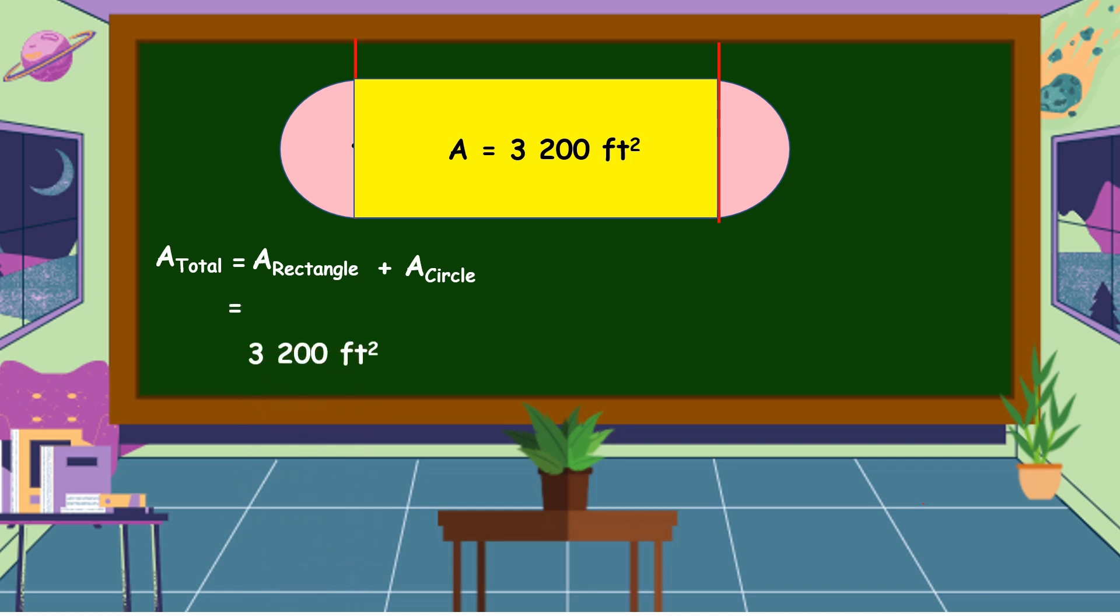So, the area of a rectangle is 3,200 square feet and the area of the circle is 1,256 square feet. Let's add 3,200 square feet plus 1,256 square feet equals 4,456 square feet. This is the total floor area.